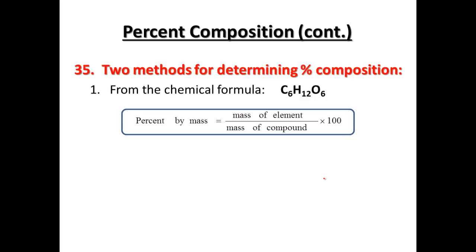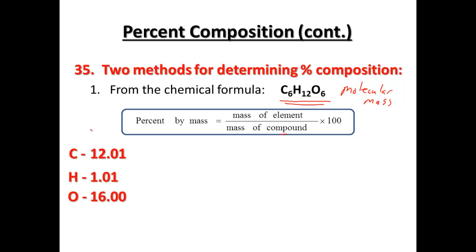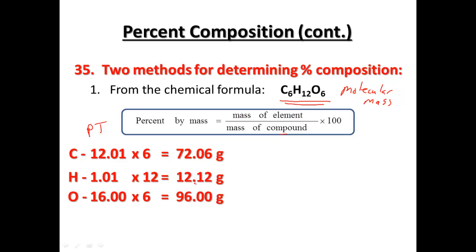There are two ways we can go about percent composition. If we're given the formula — let's say C6H12O6 — mass of the element divided by the mass of the compound, we first need to find the molecular mass. So the molecular mass, or the total mass of the compound, is what we need to find. From our periodic table we take the mass of carbon, mass of hydrogen, mass of oxygen, each multiplied by the number of that element: six carbons, twelve hydrogens, six oxygens — all multiplied out to find the total mass.